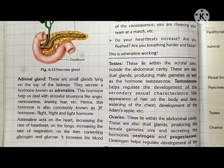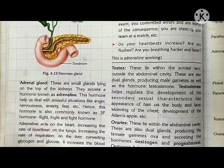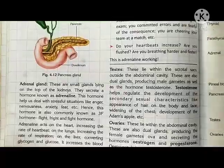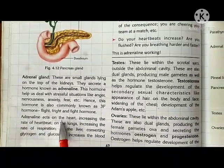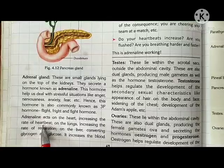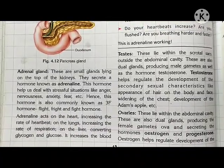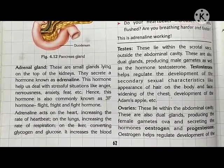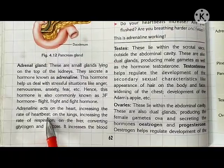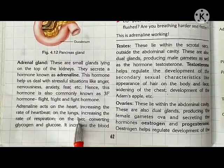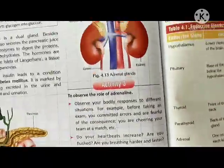Adrenaline is the hormone responsible for helping us when we are suffering from anger, nervousness, anxiety, or fear — it helps us in such stressful conditions. Adrenaline acts on the heart by increasing the rate of heartbeat, on the lungs by increasing the rate of respiration, and also helps the liver to maintain metabolism by converting glycogen to glucose. It also increases blood pressure.